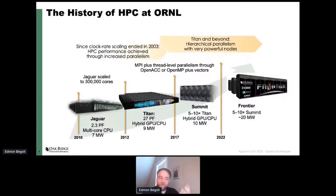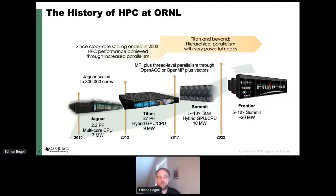Many know ORNL by its high-performance computing prowess. The Department of Energy is the American custodian of computing excellence and runs the largest high-performance computing systems in the United States, and usually in the world. Historically, in 2010 we had the Jaguar system, then Titan. Titan was the first to use GPUs and CPUs combined — at that time for power saving, because GPUs were more efficient for certain types of computation.